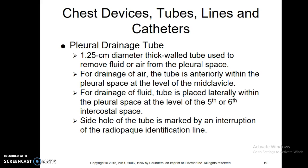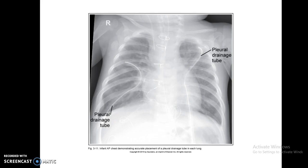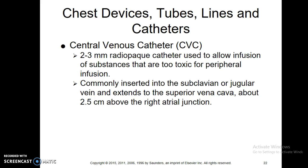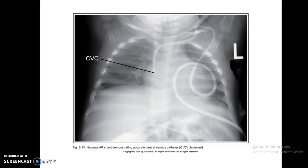Drainage tubes you can look over on your own. Here are a couple pictures showing bilateral drainage tubes on an infant. For a CBC, you can see that towards the middle on the right side. You want to make sure it doesn't get all bunched up on a baby, and it should be towards the right side with accurate placement.